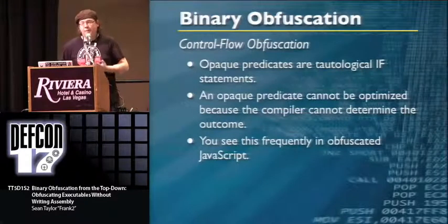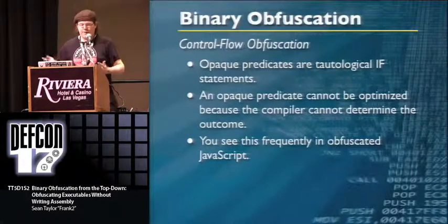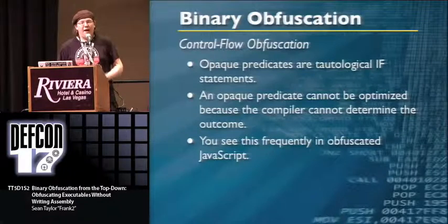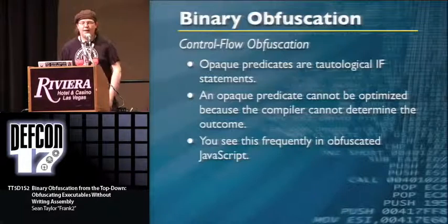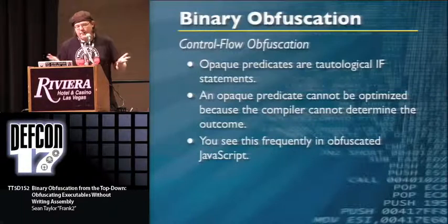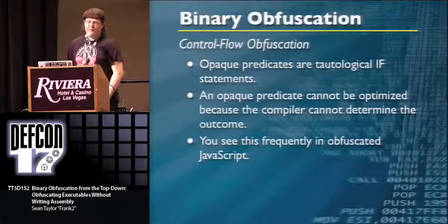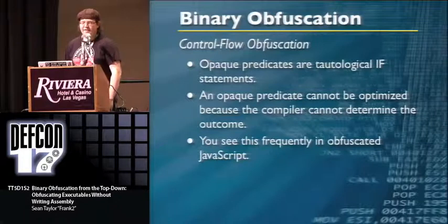One thing we'll cover is opaque predicates — these are tautological if statements that are always true or always false. They can't be optimized because the compiler doesn't know what the statement is actually going to evaluate to at runtime. You see this a lot in obfuscated JavaScript, in malicious JavaScript doing ActiveX injections, and in proprietary code distributed by Google and Apple.